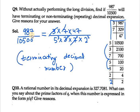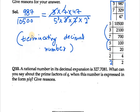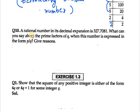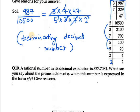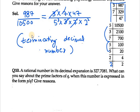That's your answer for question number 9. Now moving on to question number 10, we have a rational number in its decimal expansion is 327.7081. What can you say about the prime factors of q when this number is expressed in the form of p by q? So we know that we have this number. Now what I will do is I will remove the decimal.